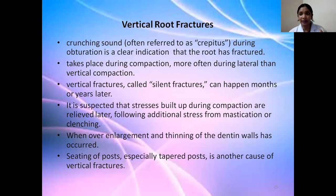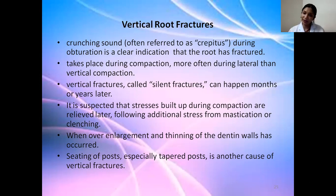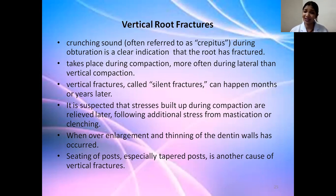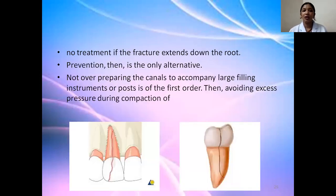Vertical root fractures can occur before, during, or after treatment. Post-treatment fractures may result from undue stresses — from lateral compaction or high occlusion — and are known as silent fractures that may appear months or even years later due to build-up of additional stress. It is important to monitor the remaining dentine thickness during canal preparation; thinning out the dentine too much weakens the tooth and can lead to fracture. When placing a post, the post size, method of placement, and post space preparation are all important, as undue stress can lead to fracture. If the fracture extends vertically beyond the root, extraction is the only option, so prevention is critical.